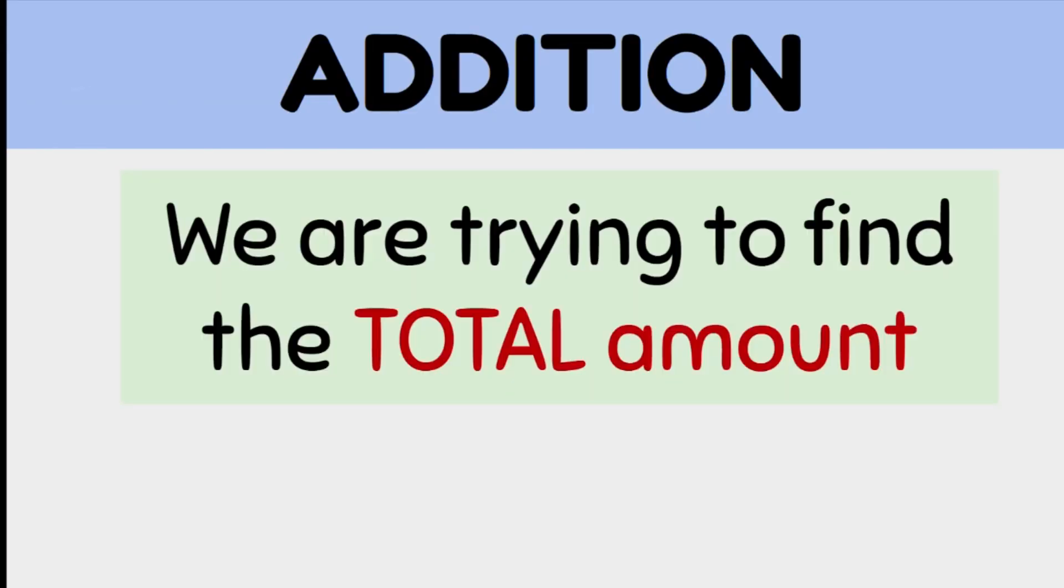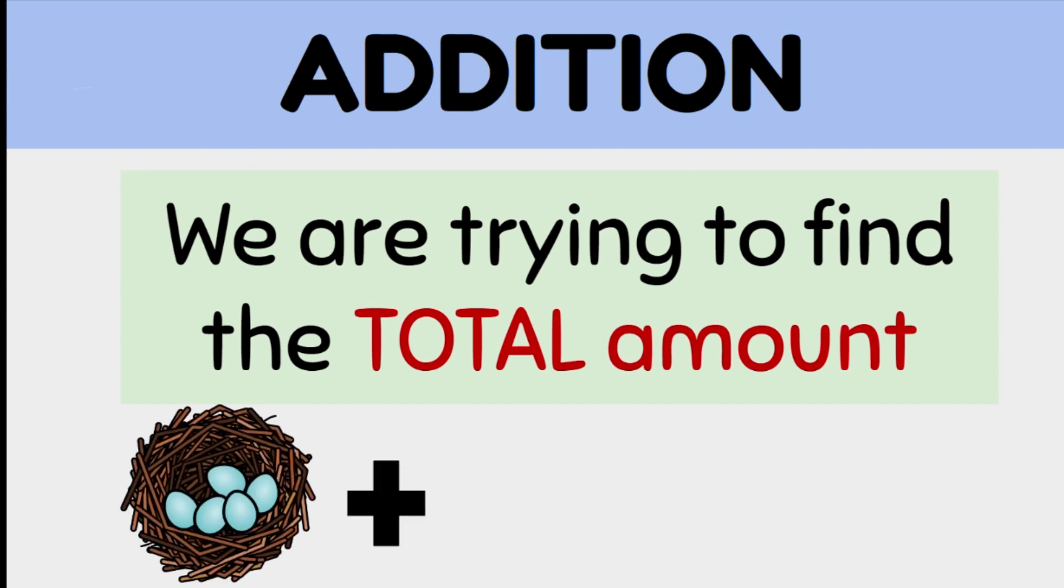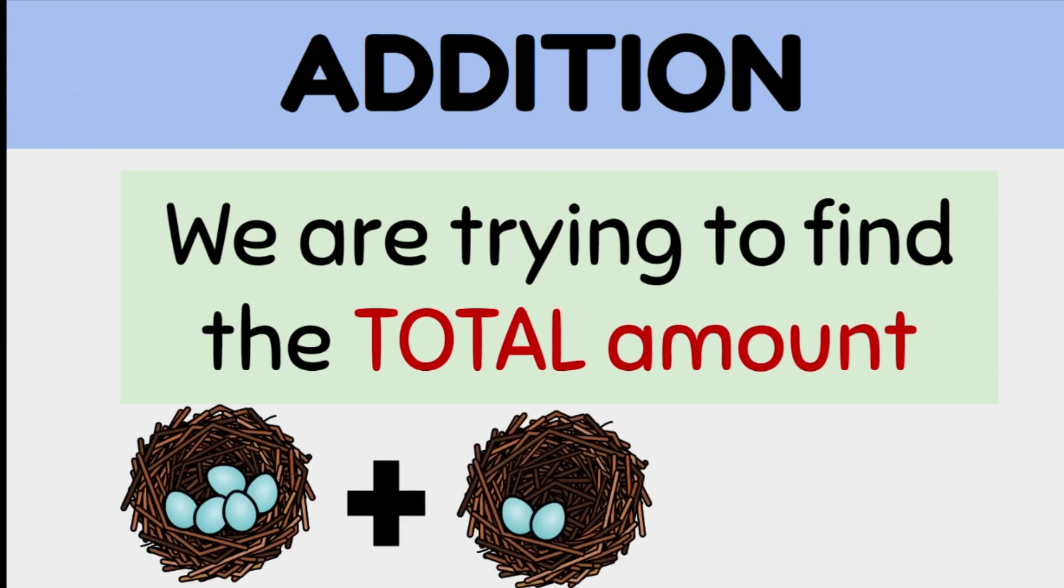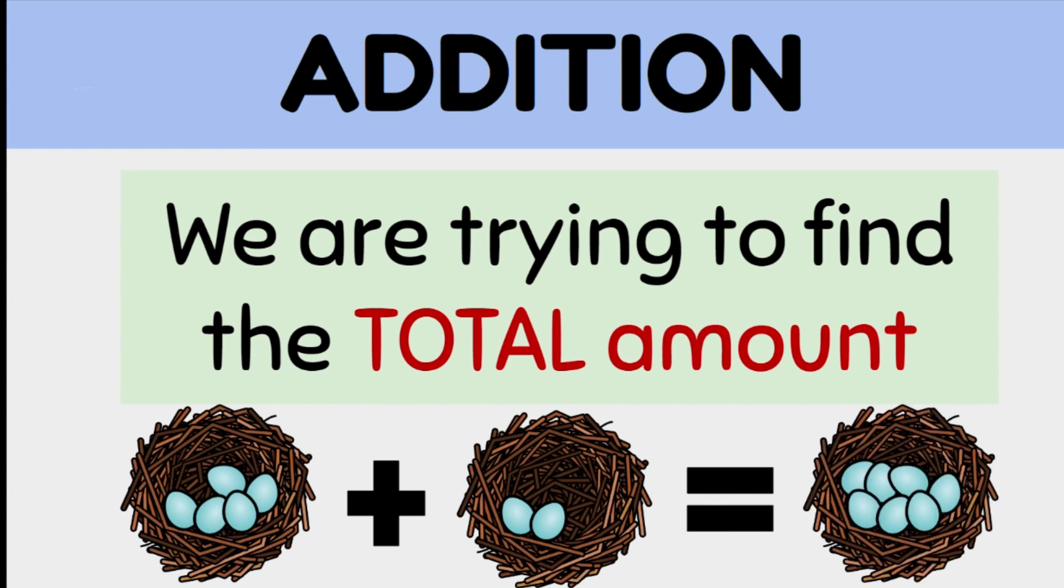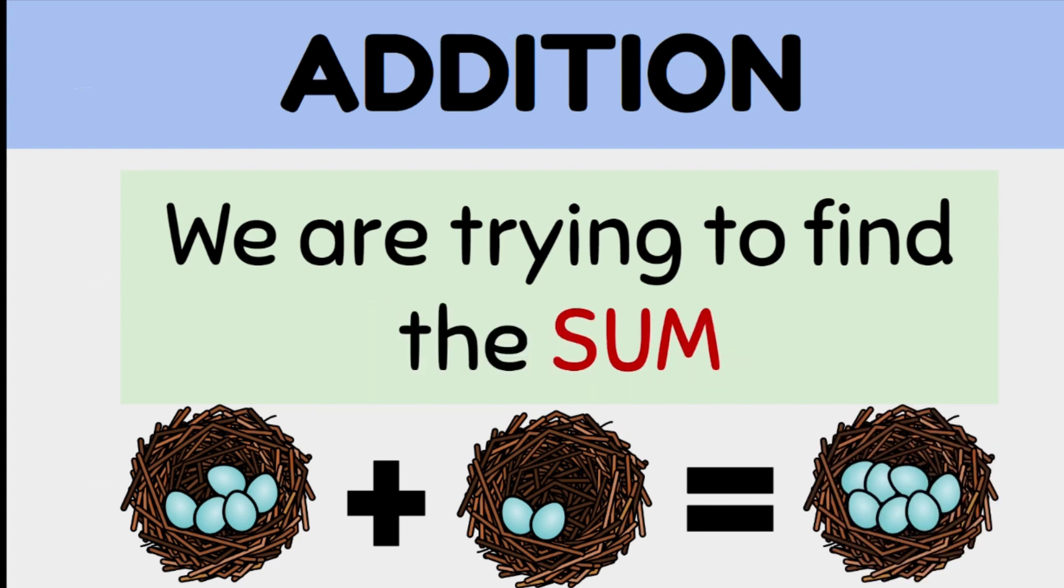Addition is adding two or more things together to try and find out the total amount. For example, five eggs in the nest plus two more eggs gives us seven eggs altogether, which is the total amount. We also can call the total amount the sum. In addition, we're trying to find out the sum total.